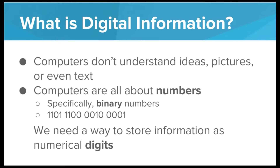So a big part of computer science is finding various ways to store information as numerical digits. Once we're able to find a good way to store information as digits, we now have digital information. And that's nice because then we can use computers to manipulate this digital information, store it, send it, etc.